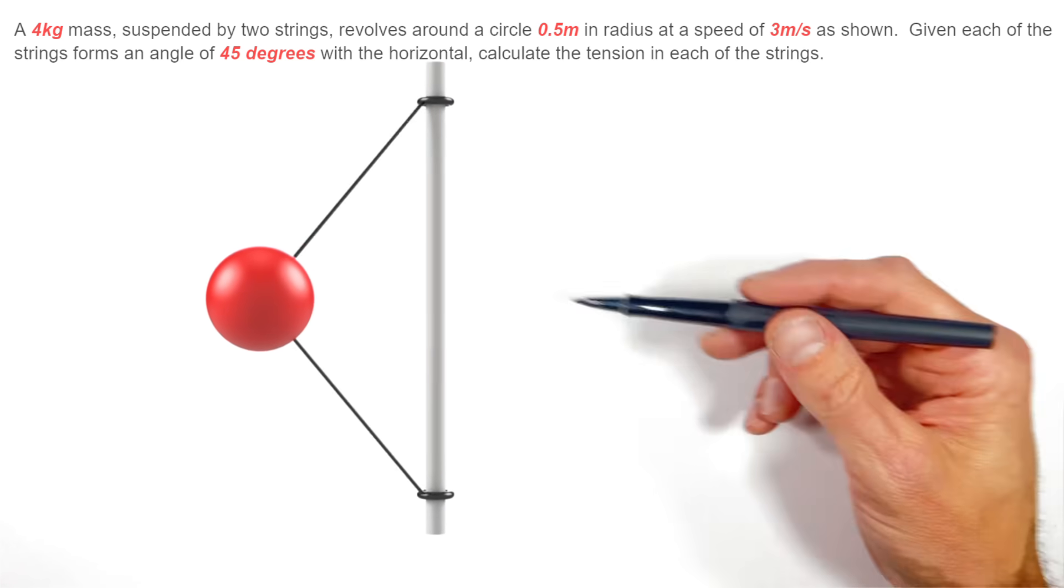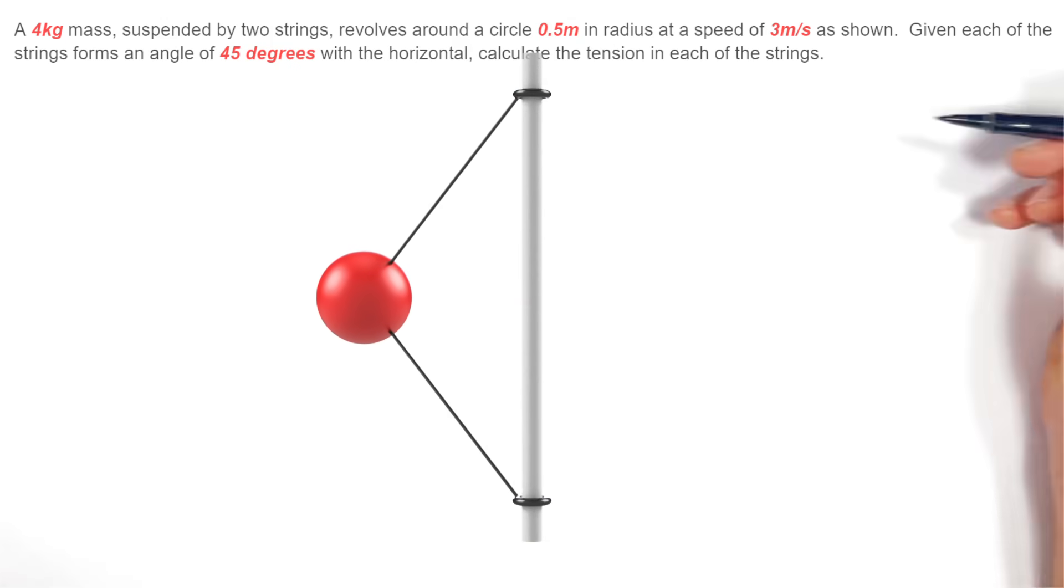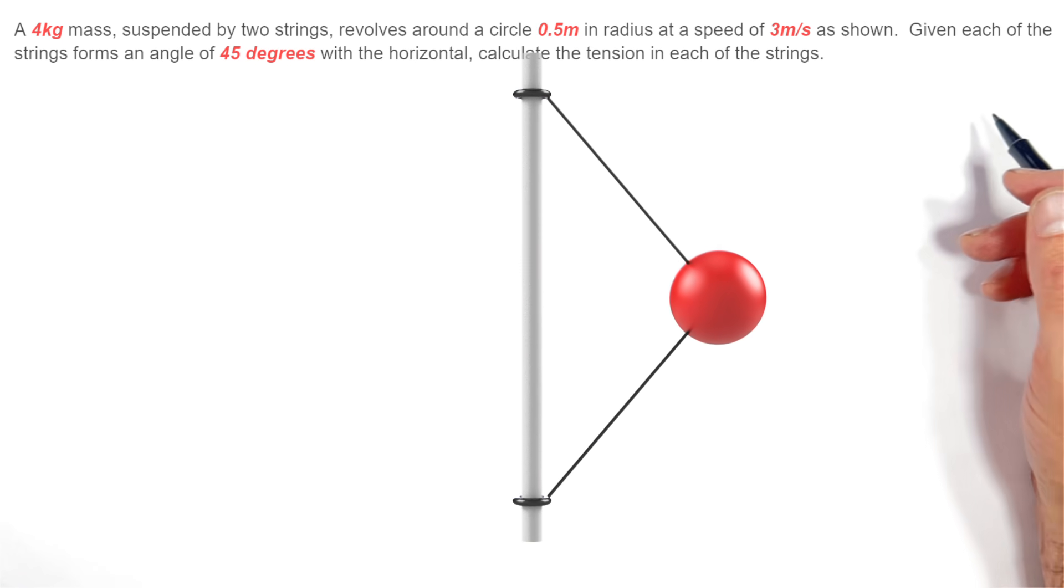So this has been how to solve this problem of a ball spinning around a rod. I hope you found this useful and on that note, that's all for now.